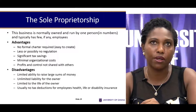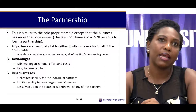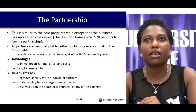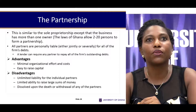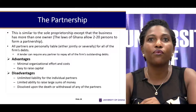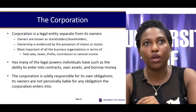A slightly improved version is the partnership. The laws of Ghana allow 2 to 20 persons to form a partnership. In general, the advantages and disadvantages of a partnership are similar to the sole proprietorship because all partners, either jointly or severally, are liable for all the firm's debts. If the firm runs into losses and cannot pay, a partner with a personal estate that can cover it may be made to take up the full bill of the entity.